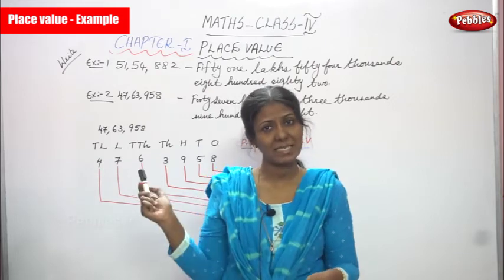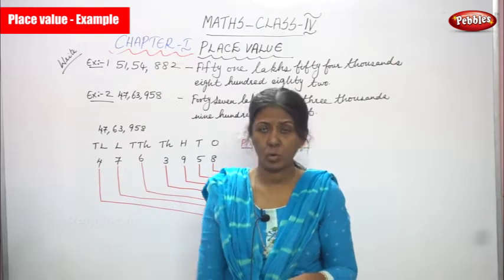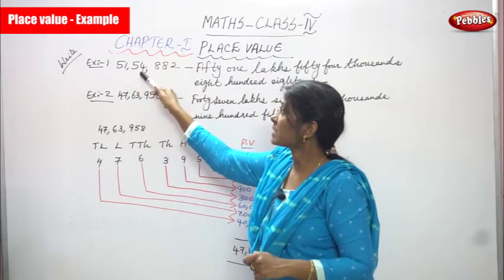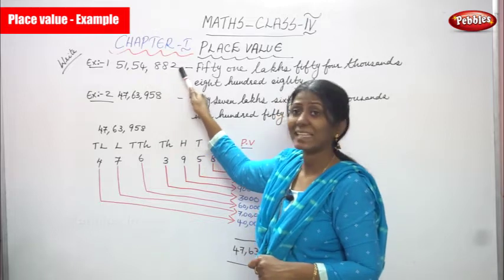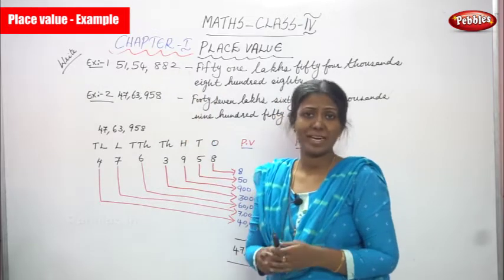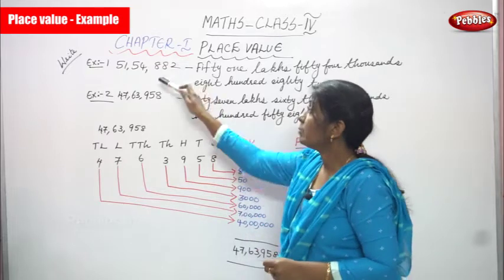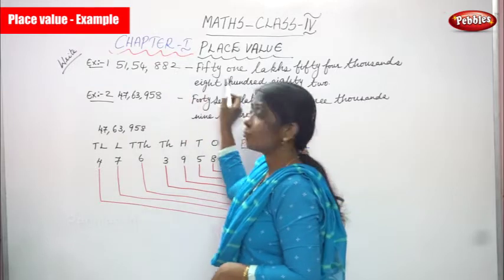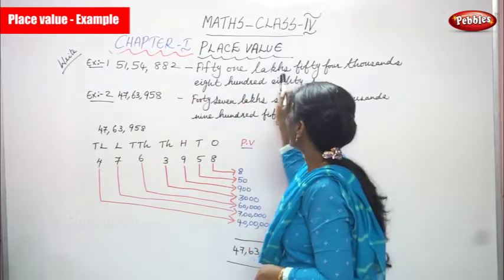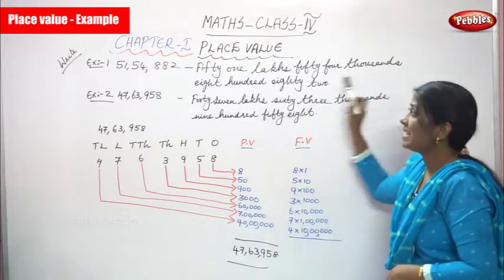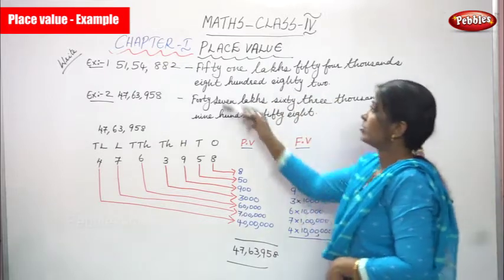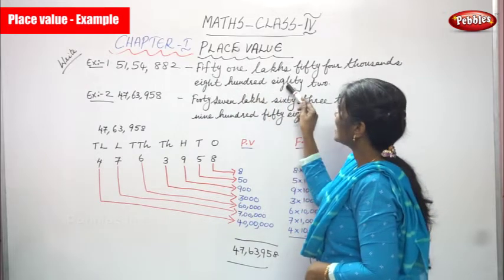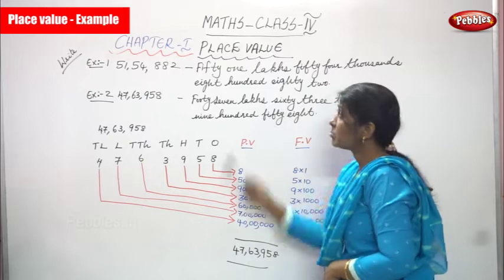Now we are going to see another example of place value. The first example is 51 lakhs 54,882 — I've explained that already. Now we must know how to write the number name. So 51 lakhs 54,882 — this is the number name we have to write.